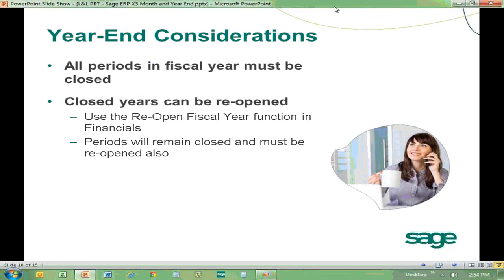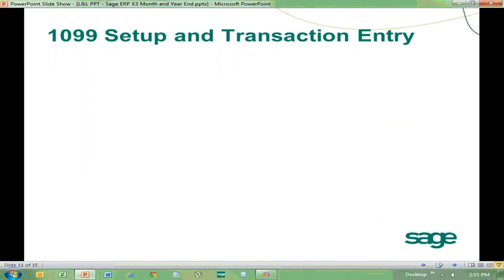Hopefully you now see how simple month-end and year-end is. Month-end is very helpful because the pre-closing verification report tells you exactly what you need to do. Year-end — once all your periods are done, there is a simulation that can be run, or you can simply run the year-end function to close out the year. That takes us to 1099. The reason we're including 1099s is that as part of your calendar year-end reporting you need to report on 1099s, and there's new functionality as of version 6.4. If you're not on version 6.4 yet, you'll see how much easier it is to manage 1099s moving forward.